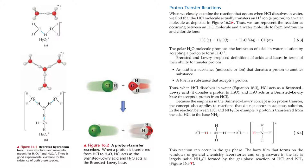Proton transfer reactions. When we closely examine the reaction that occurs when hydrogen chloride, or hydrochloric acid, dissolves in water, we find that the hydrochloric acid molecule actually transfers a hydrogen ion — which is a proton — to a water molecule, as depicted in Figure 16.2. When a proton is transferred from hydrochloric acid to water, hydrochloric acid acts as the Bronsted-Lowry acid and water acts as the Bronsted-Lowry base. We can represent this as: HCl(g) + H2O(l) → H3O+(aq) + Cl-(aq). The polar water molecule promotes the ionization of acids in water solution by accepting the proton to form hydronium ions.